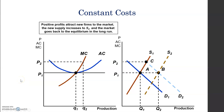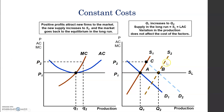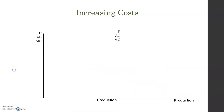Positive profits attracted new firms to the market, supply increased to S2, and the market returns to long-run equilibrium. The industry supply in the long run is therefore a horizontal line — quantities Q1 and Q2 are both supplied at the same price, making supply completely elastic.